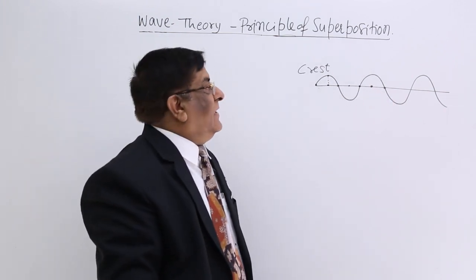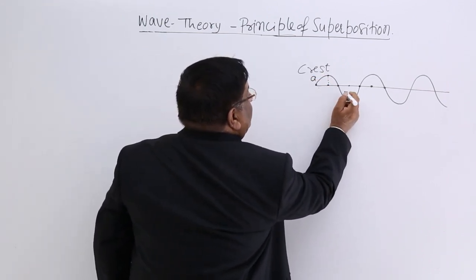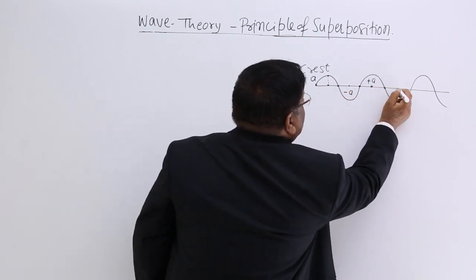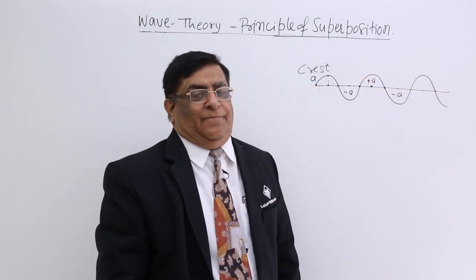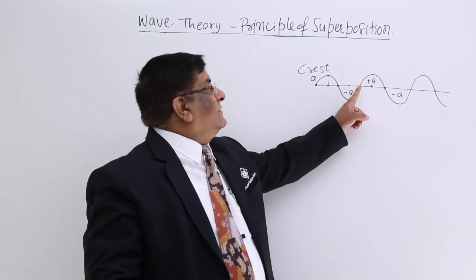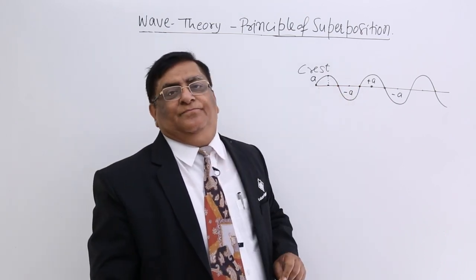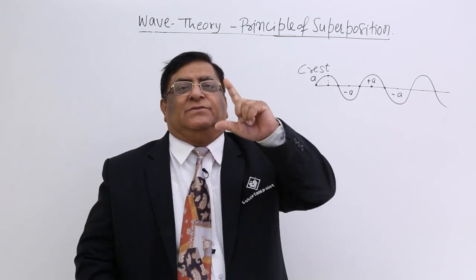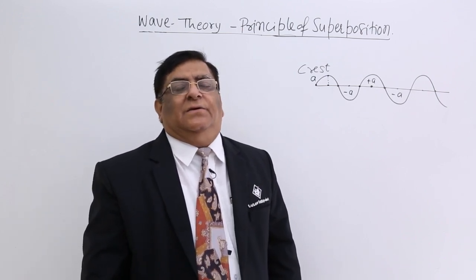In the language of the graph, here we have amplitude A, here we have amplitude minus A, plus A, minus A. So a wave travelling at any time gives energy to these particles — here energy is zero, here energy is maximum. In other words, this is giving displacement to the particles.